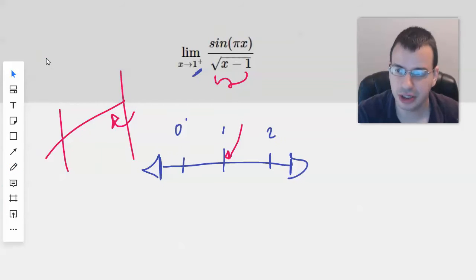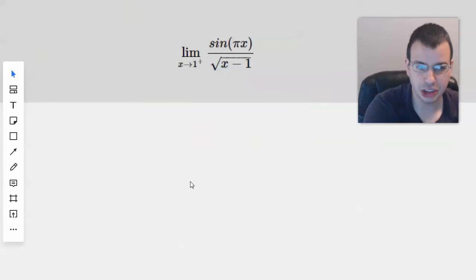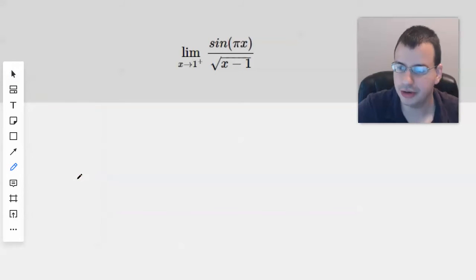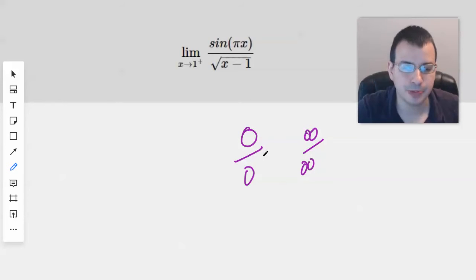And so the idea is they want to still give us an indeterminate form. So an indeterminate form is something that you really can't tell what's going on. So 0 over 0, infinity over infinity. You might even be able to say that 0 times infinity is indeterminate because that's the same as 0 over 0.